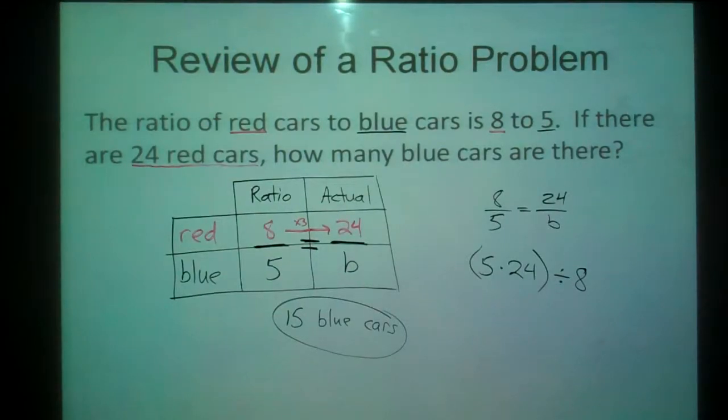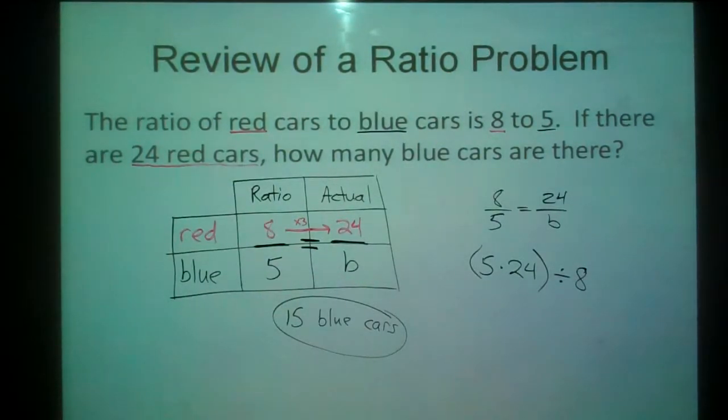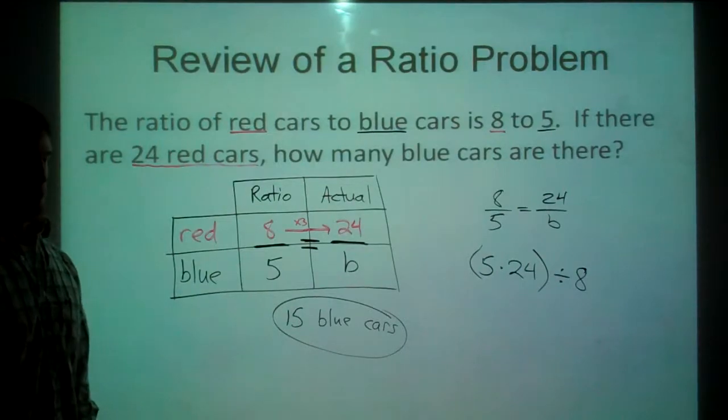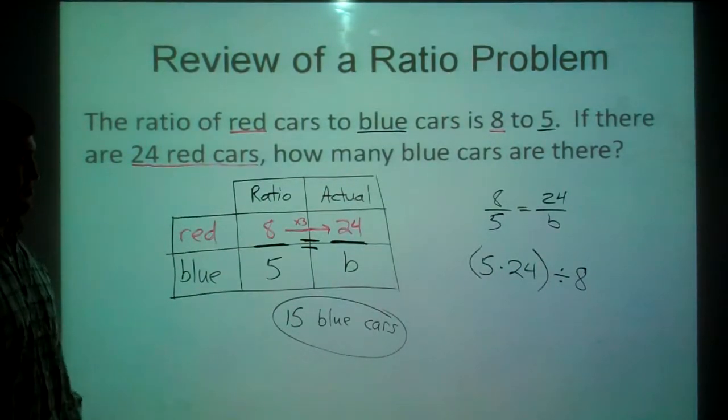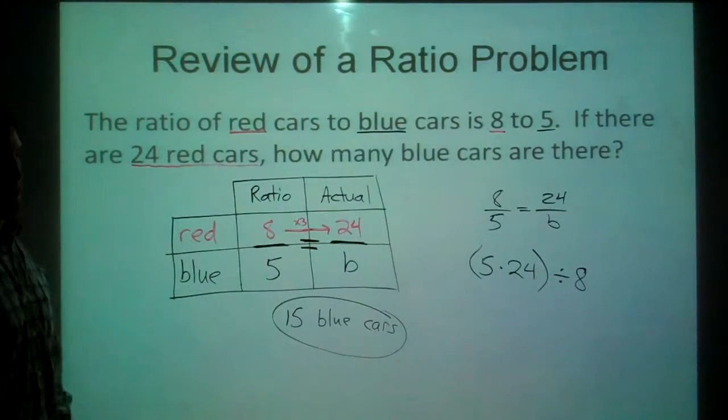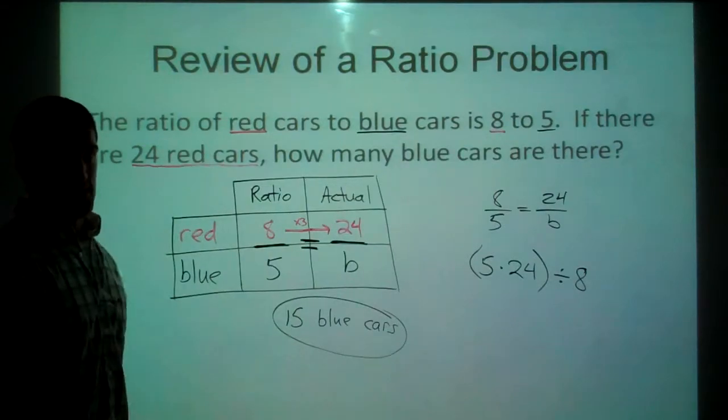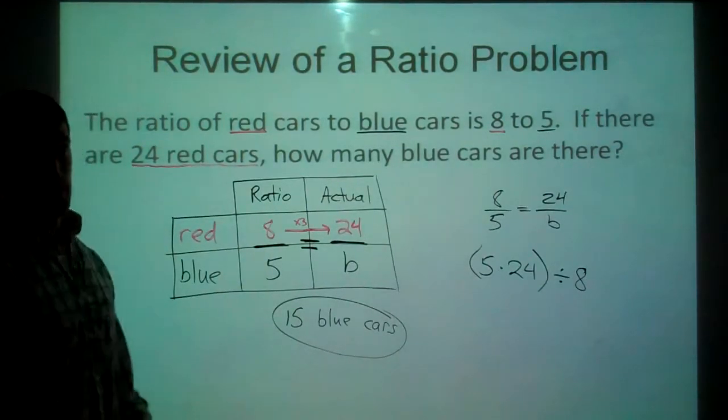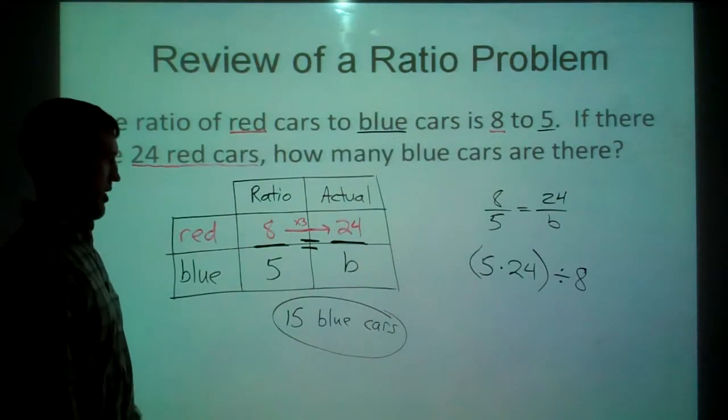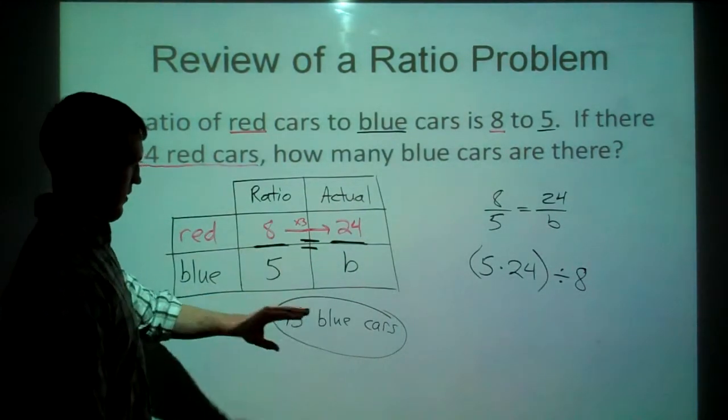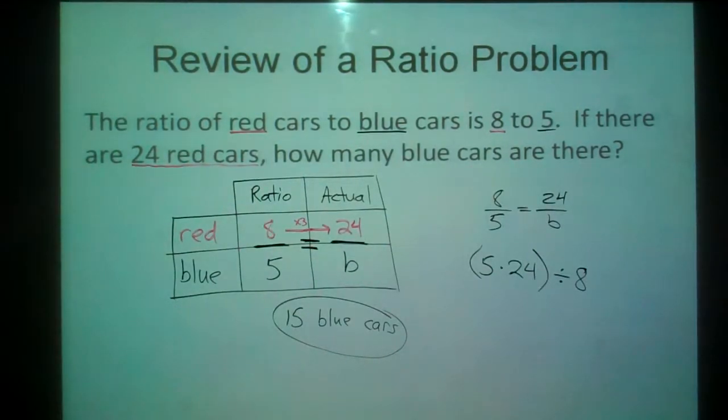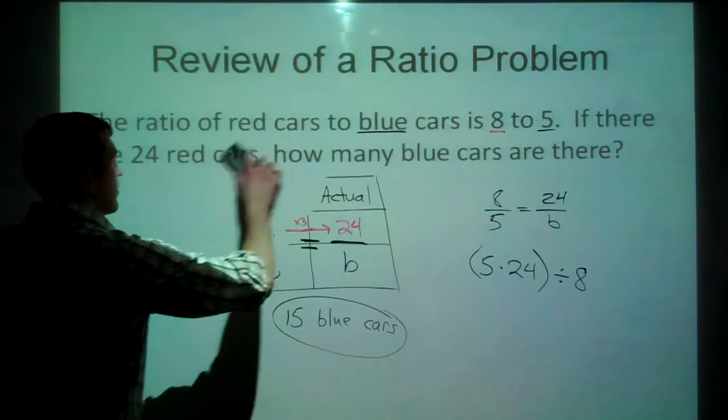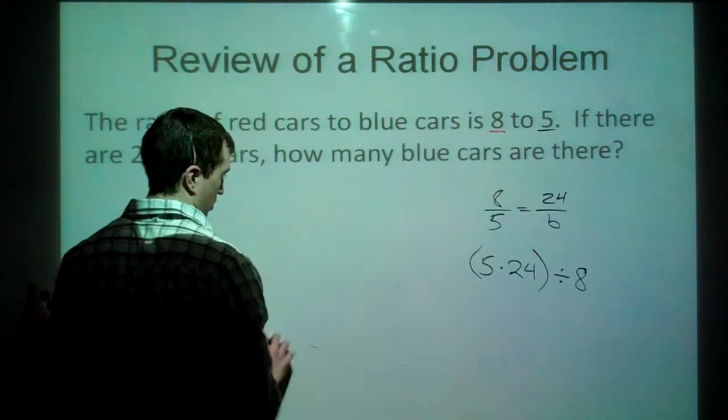Now, we're going to deal with problems where they ask us for the total or they'll give us a total. Either way, we haven't dealt with it yet, but that's what we're dealing with today. But had they asked us for the total amount of cars here, we would have been able to figure that out still. All we would have to do then is add 24 and 15 and we could get the total amount of cars. So we'll see what that looks like in one of the next ones here. So that's a review of what we have been doing or what we've seen before.